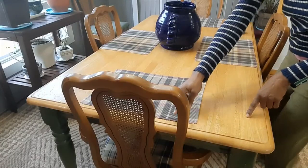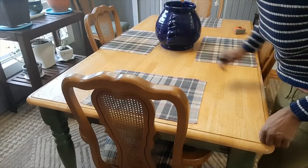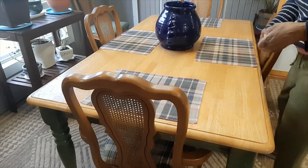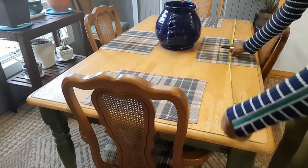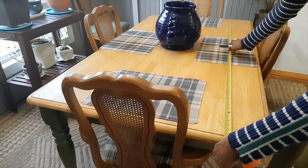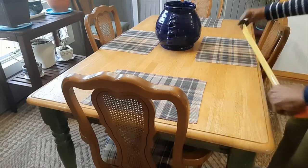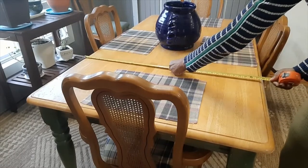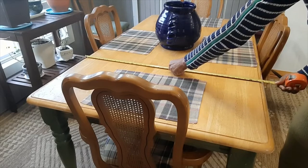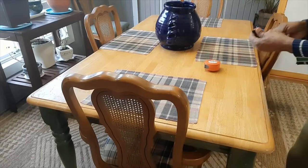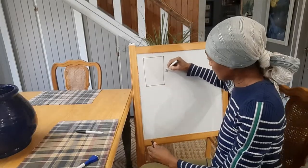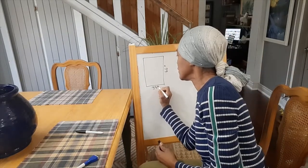The first thing we need to do is get the measurement of our table. So I'll measure the length of the table and the width of the table. Let's go for the length. So my table is 66 inches long and 38 inches wide. So let's get that on our whiteboard. So this is 66 inches and this is 38 inches.